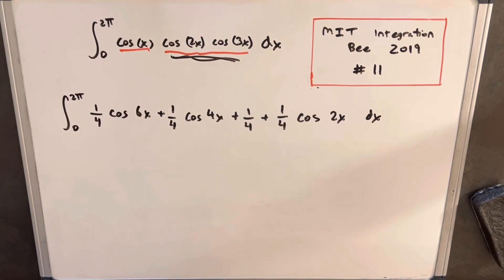Okay, so now I've rewritten this, and I took the half that we had out front, and I just distributed it. So that's why you see all these one-fourths in here.